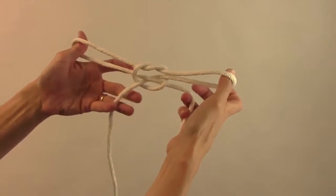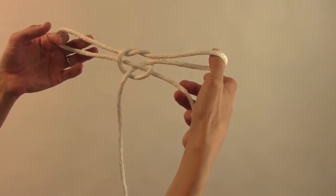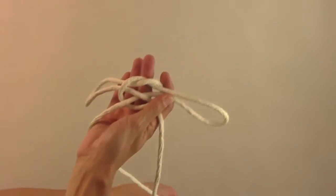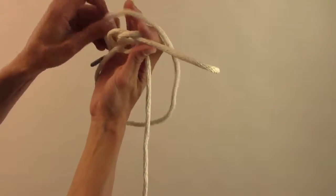So now we have the basis. This is actually the handcuff knot right here. But then what we're going to do is we're going to do an extra step. We're going to bring this line all the way around the back and half hitch it.